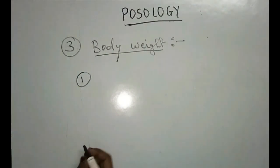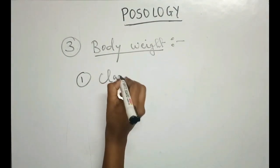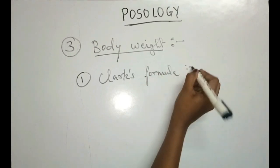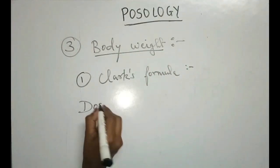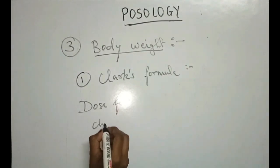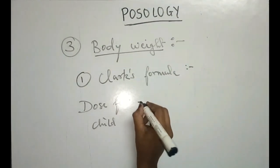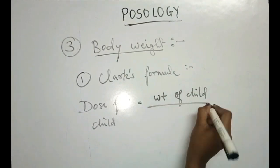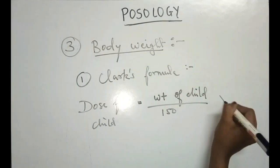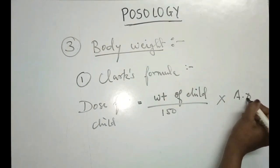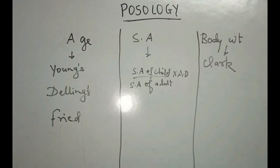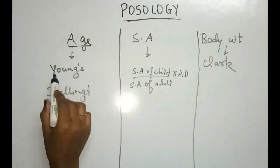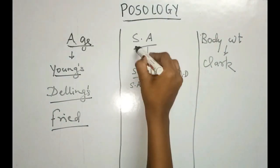The first formula for body weight is Clarke's formula: dose for child is equal to the weight of the child divided by 150, multiplied by the adult dose. This is all about posology — for calculation by age we can use Young's, Dilling's, and Fried's formulas.